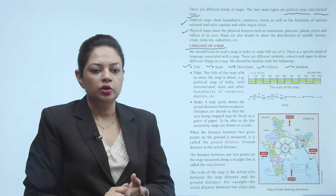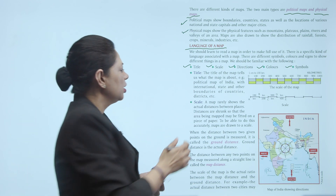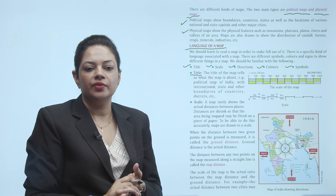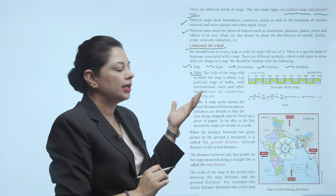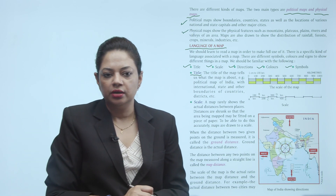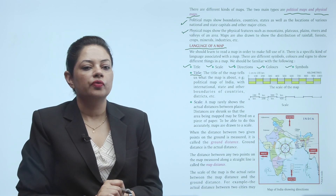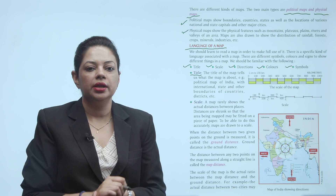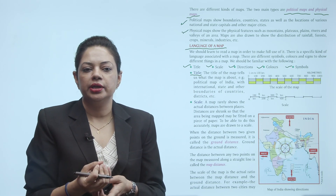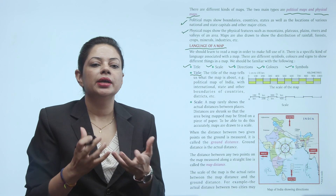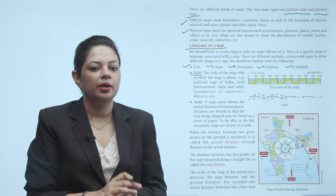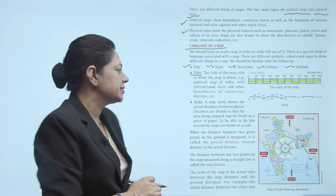Kisi bhi map ko padhne ke liye hum in paanch cheezon ka pata hona chahiye. Title — jo map ka title hota hai woh batata hai ki yeh map kisi ki information de raha hai, yani ki yeh map kis ke baare mein hai. Jaise 'Political Map of India' — toh hum padhenge ki India mein kaun si states hain, boundaries of countries kya hain, districts kaun si hain — aise title se hum map ke baare mein pata lagate hain.